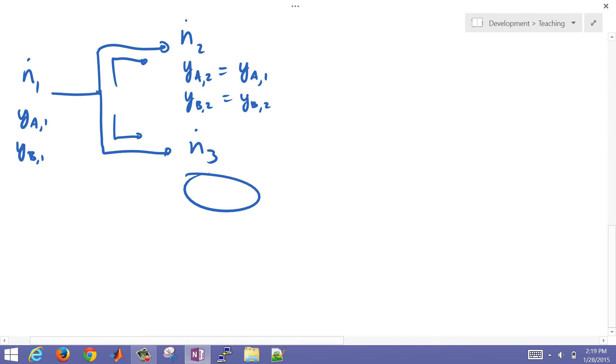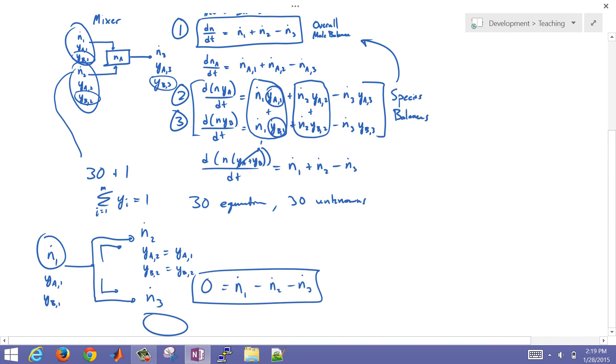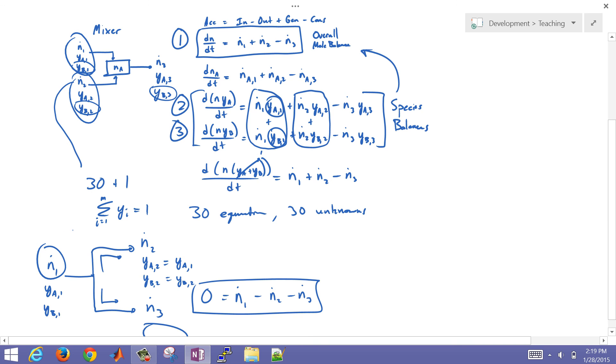So in this case, and the same would work for stream 3, we really only have one equation and one degree of freedom that we can write. And, you know, so it's just going to be n_dot_1 minus n_dot_2 minus n_dot_3, and the accumulation was 0. So we just really have that equation, overall mole balance or overall mass balance. They'll just take whatever we had coming in and split it into the two streams. So that's just a brief tutorial on degree of freedom analysis for a mixer and then also for a splitter.